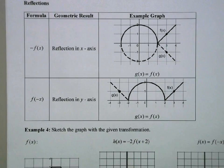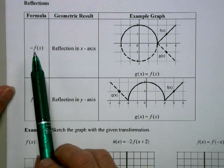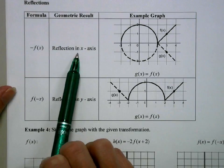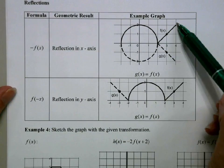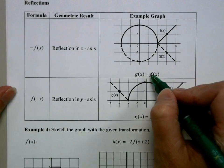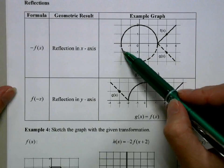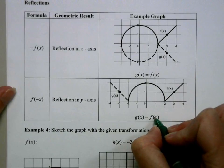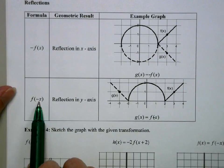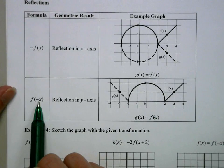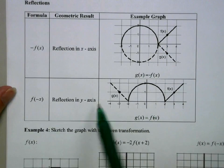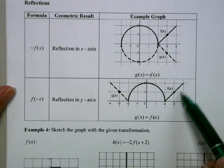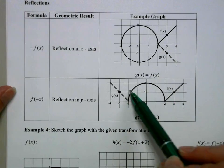Last, we're going to talk about reflections. If we multiply a function by a negative, it gets reflected in the x-axis — the graph flips over the x-axis. If the x itself becomes negative — f of negative x — then the graph is reflected in the y-axis. It's a little hard to see on this particular graph, but the pieces swap sides and the two sides are just flipped.